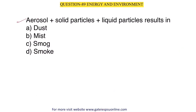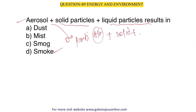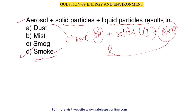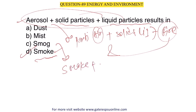Next question: aerosol plus solid particles plus liquid particles results in — dust, mist, smog, or smoke? Aerosols are particles in air. When aerosols mix with solid or liquid particles and combustion occurs, it produces smoke. This combination creates smoke.